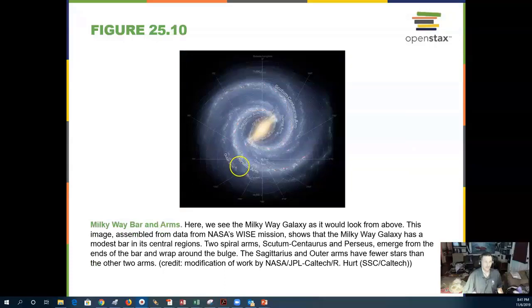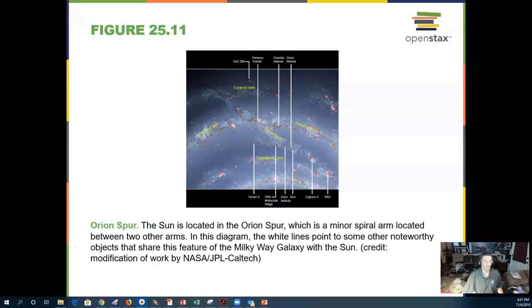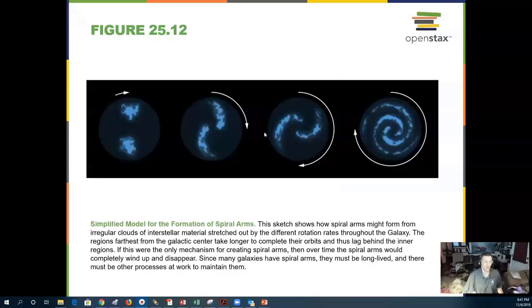There are a number of arms that come off the Milky Way galaxy, and they have different names, depending on what constellation we see them in. Here we see the Orion spur, with lots of gas and dust and star forming regions. A simplified form of the spiral arms shows two globs of gas and dust starting to rotate, and they form these spiral arms.